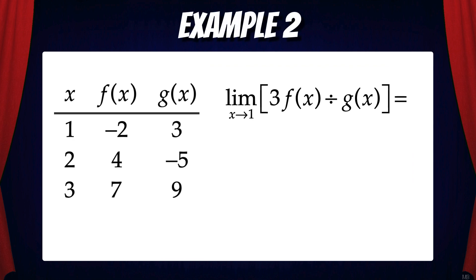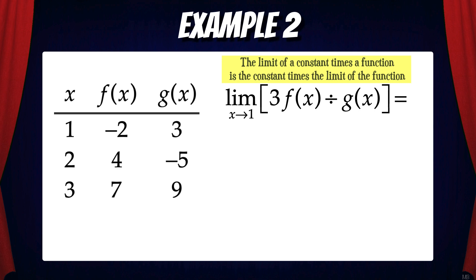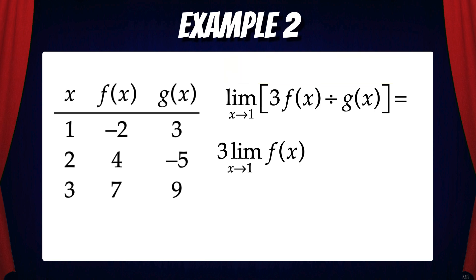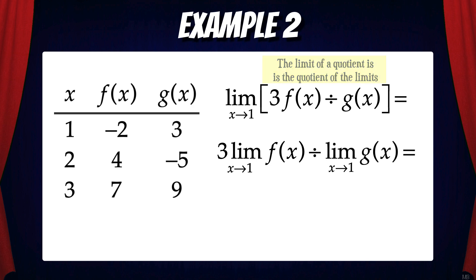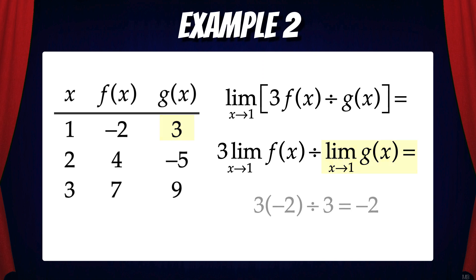How about this one? The limit of 3f divided by g as x approaches 1. We're going to apply several limit laws. First, the limit of a constant times a function equals the constant times the limit of the function, so we can move the 3 in front of the limit for f. That gives us 3 times the limit of f as x approaches 1. From the table, the limit of f as x approaches 1 equals negative 2. Then we apply the limit of a quotient — the quotient of the limits. The limit of g as x approaches 1 equals 3. So 3 times negative 2 is negative 6, divided by 3 equals negative 2.